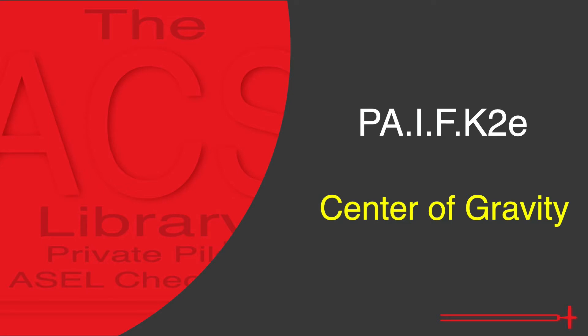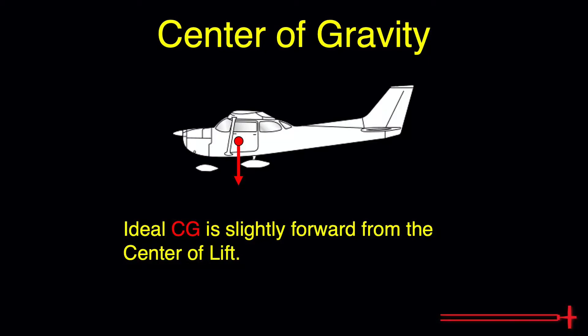Information for this video was gathered from chapter 10 of the PHAC, Weight and Balance. Ideal CG, depicted by the red dot, is slightly forward from the center of lift, depicted by the green dot and arrow.